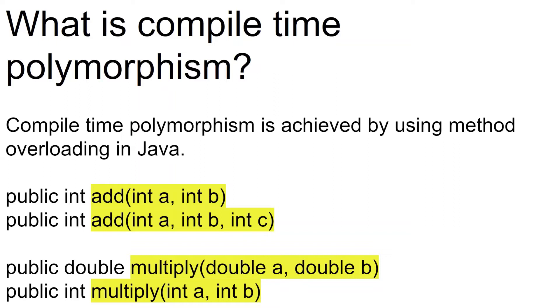Let's have a look at the second case, which is the multiply method here. We have a multiply method with two parameters of the type double, double a comma double b. So we can achieve compile time polymorphism either by changing the number of parameters or by changing the data types of the parameters. That is compile time polymorphism in Java.